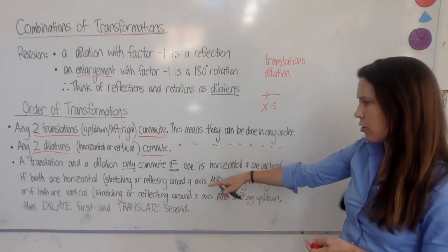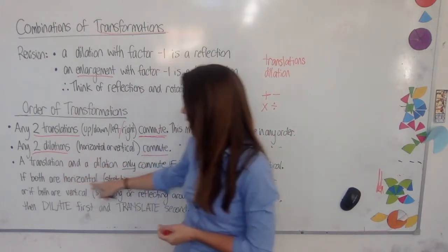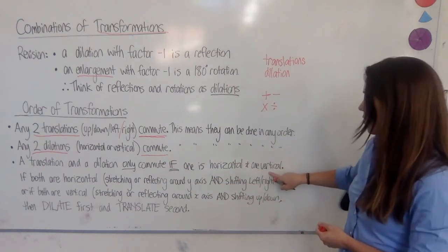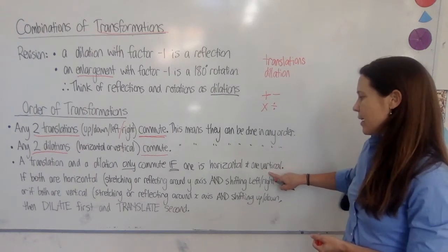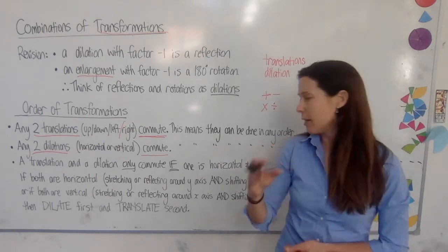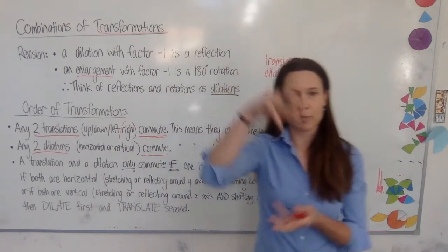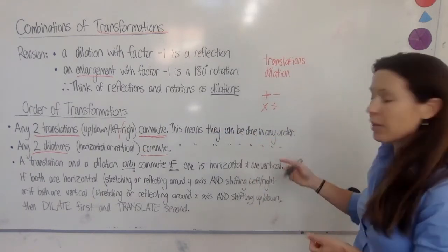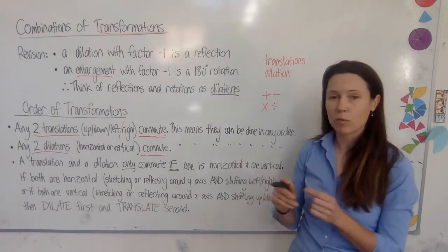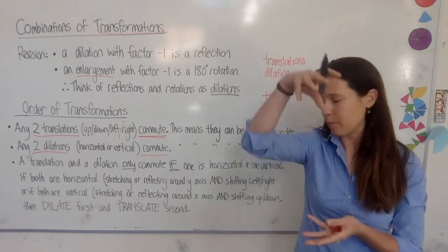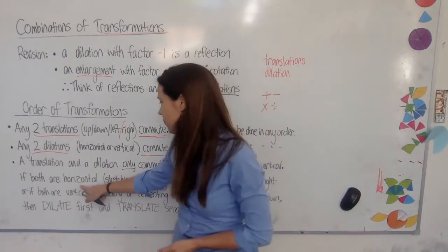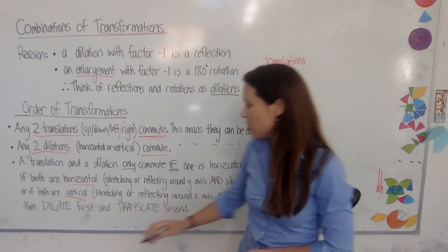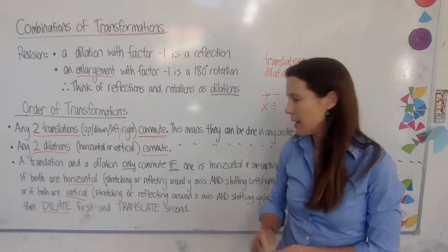Here's the tricky part. If you're doing a translation and a dilation, they only commute if one is horizontal and one is vertical. So if you're translating horizontally — sliding left to right — and also performing a dilation vertically, such as stretching, compressing, or reflecting upside down, they're fine to do in any order. They commute because one is left-to-right and the other is up-down. But if both are horizontal or both are vertical, you have to do the dilation first and then the translation.